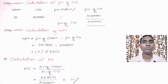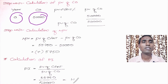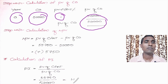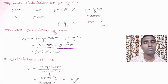Step two is the calculation of present value of cash outflows (CO). As you know, the time period for CO is zero, so the investment of 50,000 rupees has a PVIF of one by default, giving a PV of CO of 50,000 rupees. Now let us calculate NPV. NPV equals present value of CFAT minus present value of CO. The result is a positive figure of 5,750. This is all about NPV.